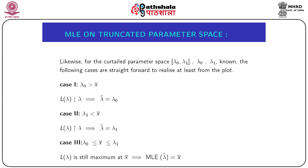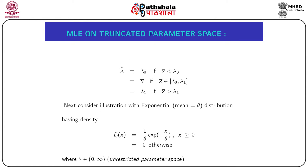Case 3: λ₀ ≤ x̄ ≤ λ₁, i.e., x̄ lies within [λ₀, λ₁]. The parameter space includes x̄, so the likelihood L(λ) is again maximum at x̄, and the MLE is x̄. Combining all three cases: the MLE of λ equals λ₀ if x̄ < λ₀; equals x̄ if x̄ ∈ [λ₀, λ₁]; and equals λ₁ if x̄ > λ₁.